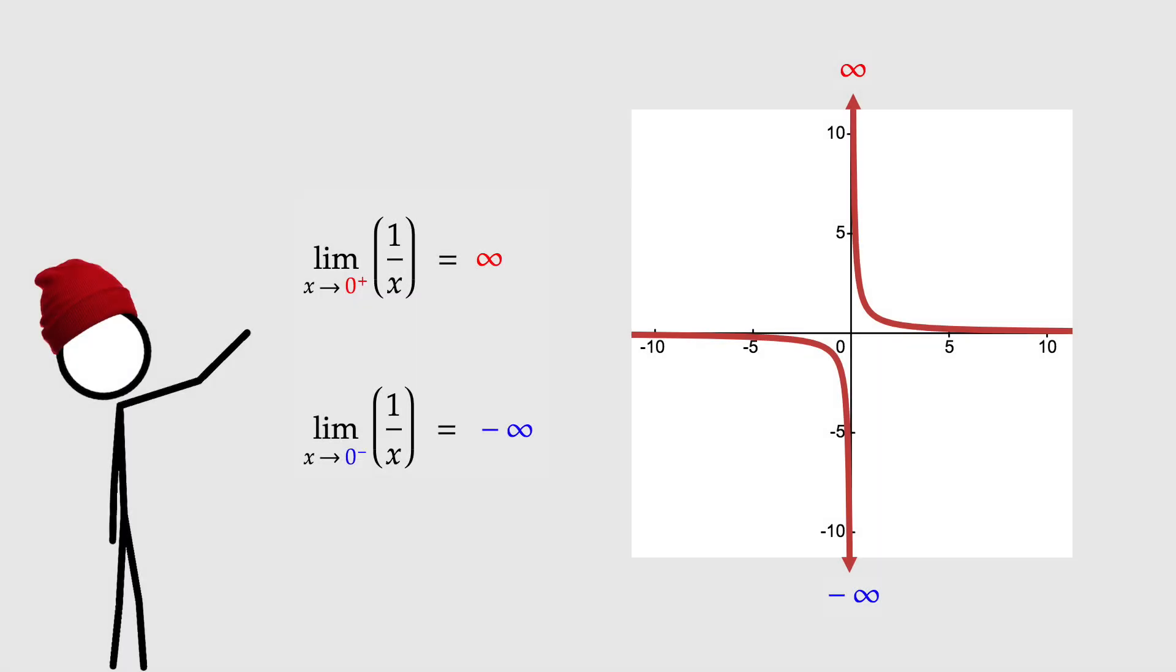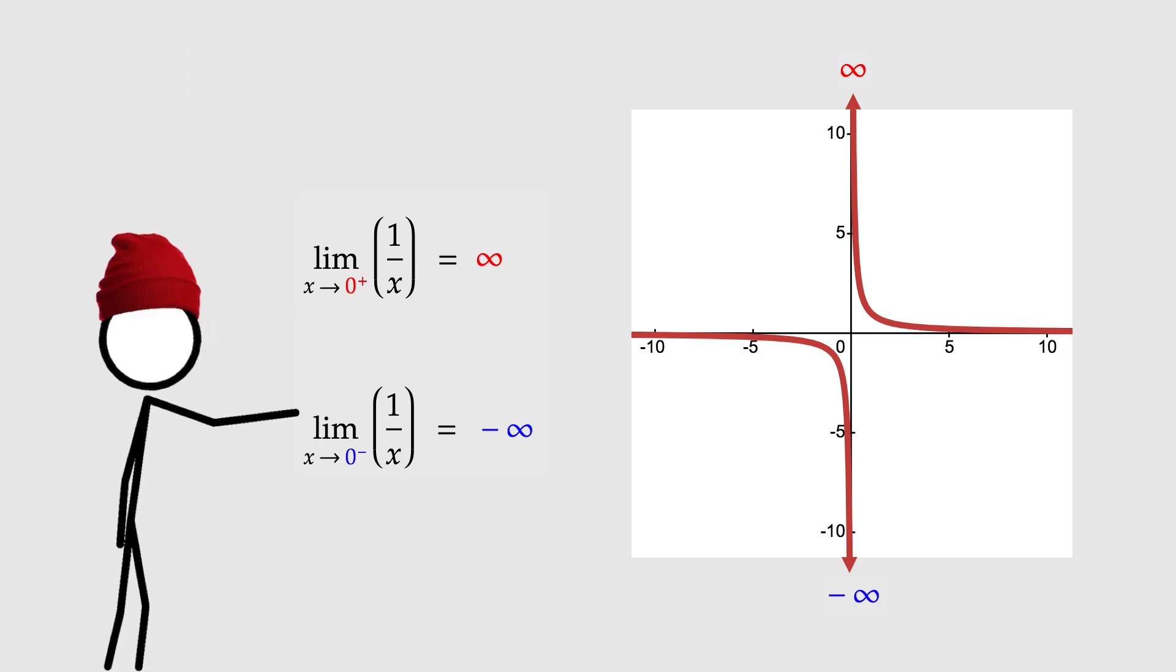Enough about wheels. I want to end this deep dive in true red beanie maths fashion. With a rant. Because there's something people always get wrong when talking about division by zero. And it grinds my gears. Limits! The limit as x approaches zero from the right equals infinity. But the limit as x approaches zero from the left equals negative infinity. That's why we can't divide by zero. Yeah, limits! Ah, no! Wrong! Division by zero has nothing, nothing to do with limits.